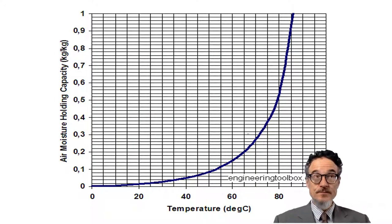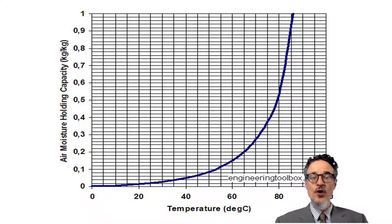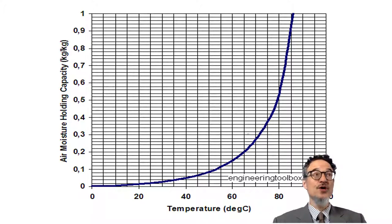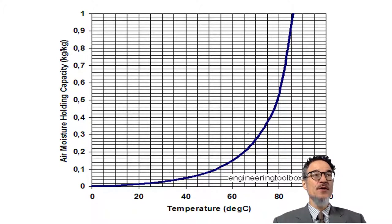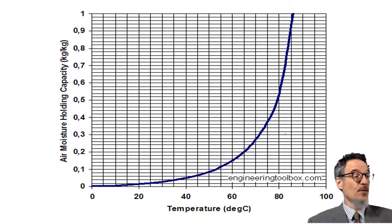Here's a graph. As you can see, it's not a straight line. As air gets hotter it can hold much more water vapour — it gets to about one kilogram of water per kilogram of air at around 93 degrees centigrade. As the air gets hotter, it holds much, much more.